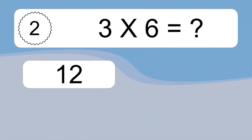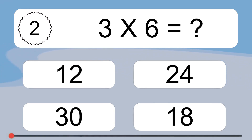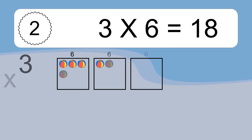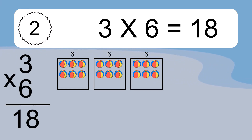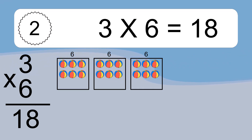3 times 6 equals what? 3 times 6 equals 18. We have 3 boxes, and each box has 6 colorful balls inside. If you count all the balls in all the boxes together, you will have 3 times 6 balls. This equals 18 balls.